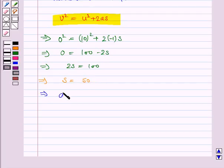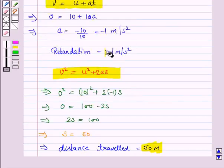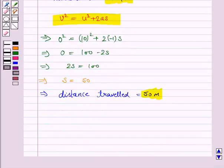So the distance travelled equals 50 meters and the retardation we obtained is minus 1 m/s². This completes the question.